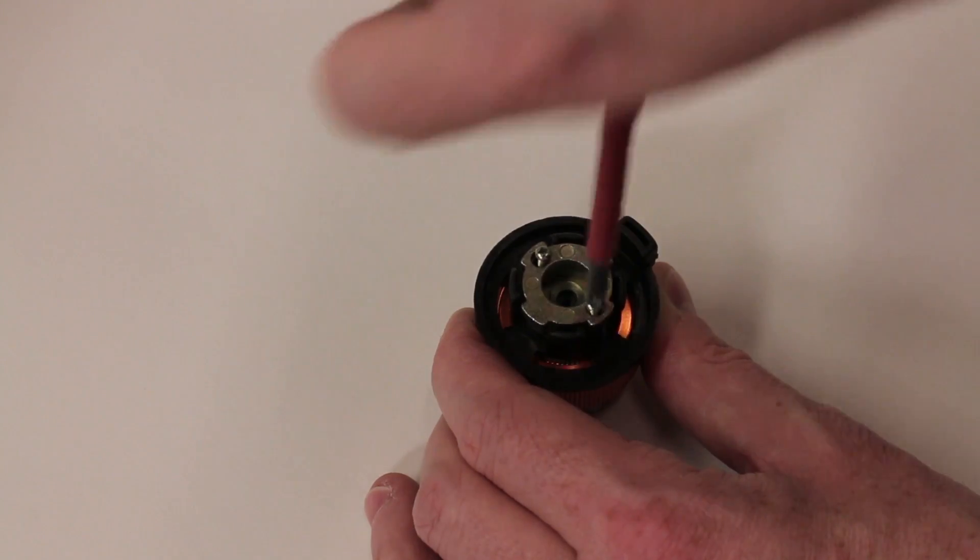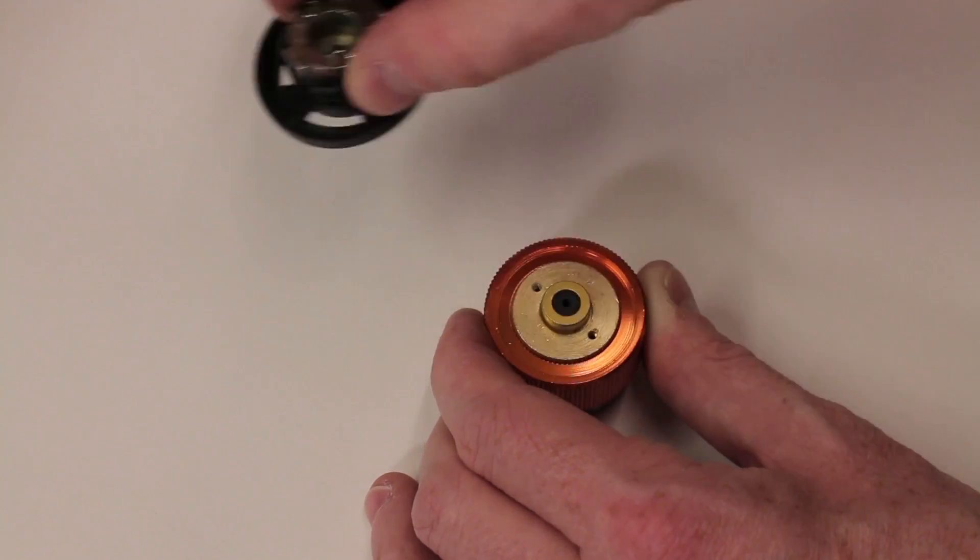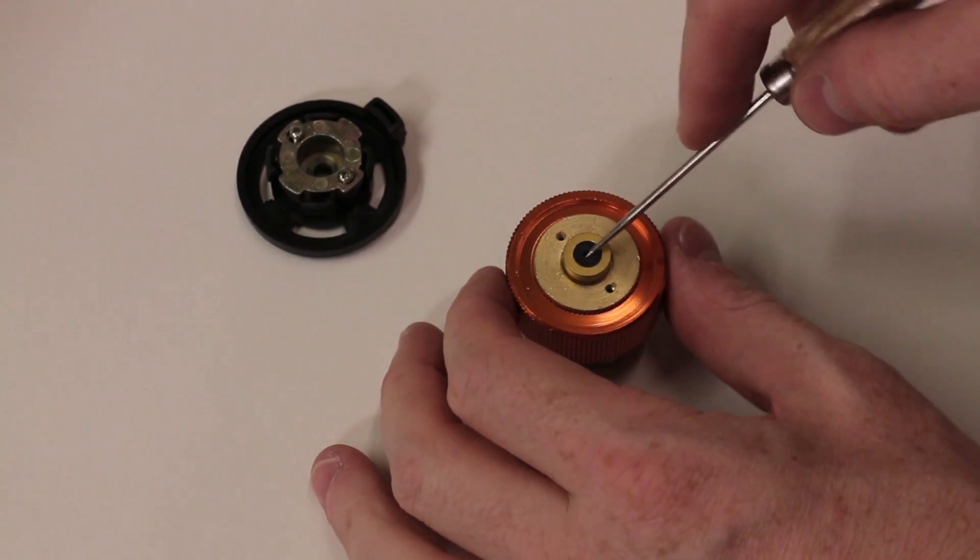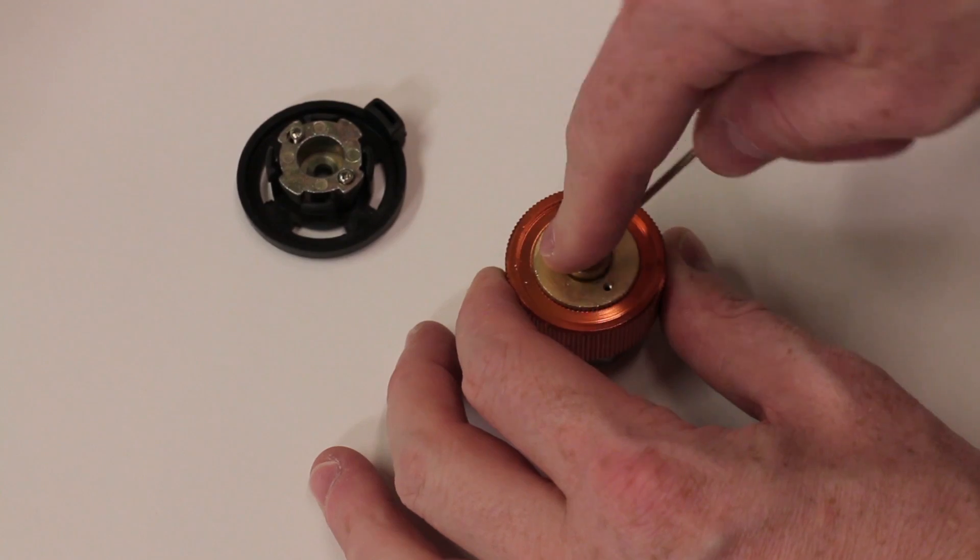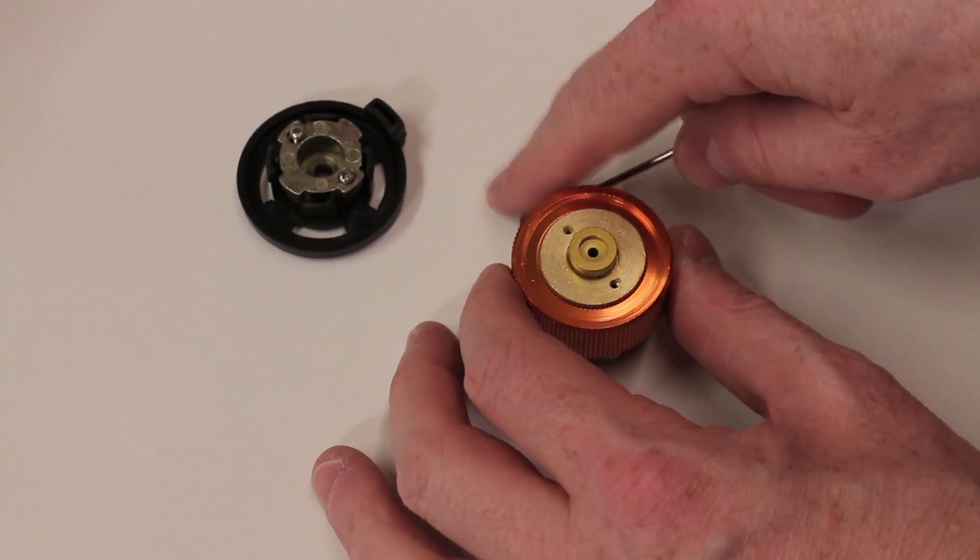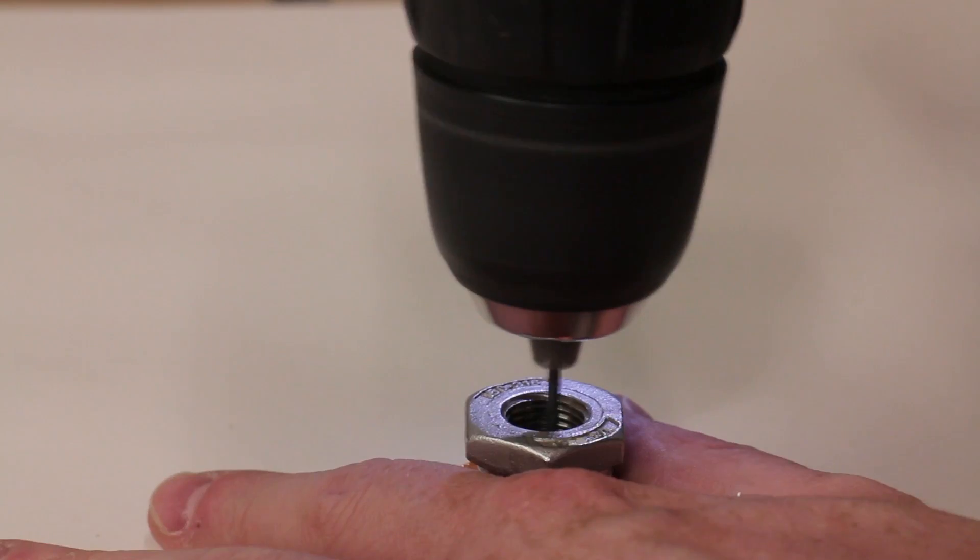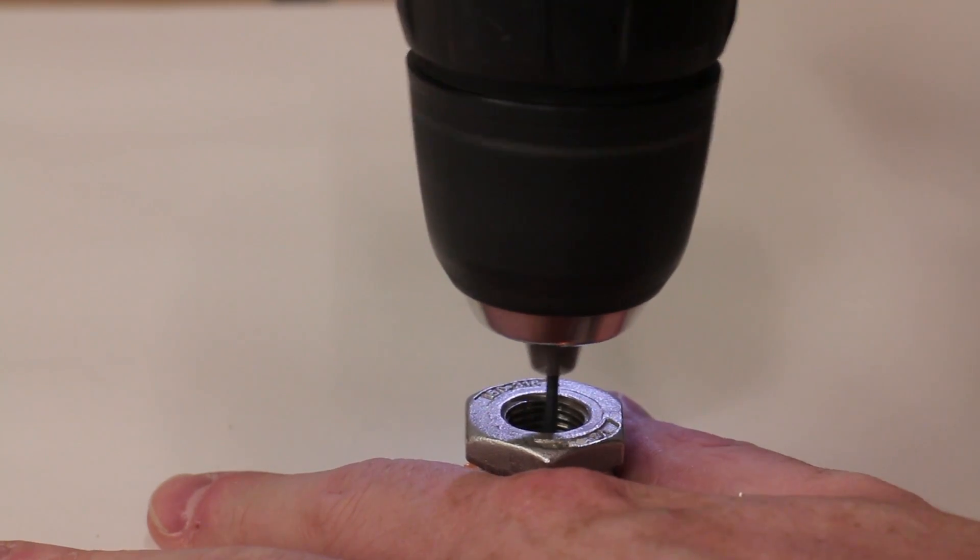The final step is to convert the bottle adapter so gas flows continually not just when something has been threaded onto it. This is a simple process and just involves drilling out the internal mechanism. You can check how this process is going by trying to blow through the adapter and seeing if the airflow is restricted or not.